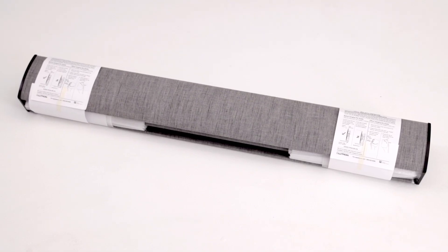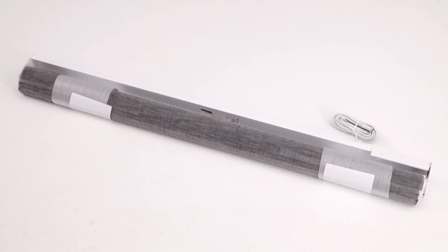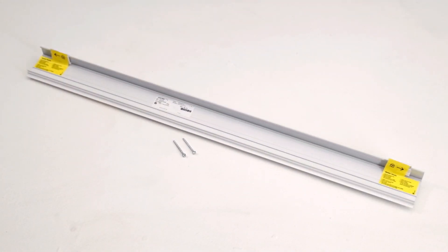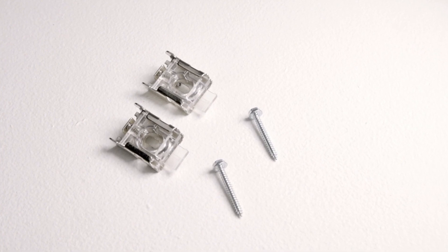Before you begin, open the box and make sure that you have all the necessary parts, including the shade, mounting rail or brackets, and screws. You'll also need a cordless drill, 3/16th drill bit, number 2 Phillips bit, a level, a screwdriver, tape measure, and a pencil.